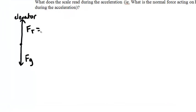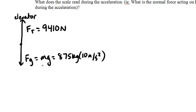We have the force of tension in the hoisting cable. We've been told that that's 9,410 newtons and we know that the force of gravity is going to be m times g. Note that we're going to use the total mass, so 875 kilograms times our 10 meters per second squared, or we have that the weight of the object is 8750 newtons.